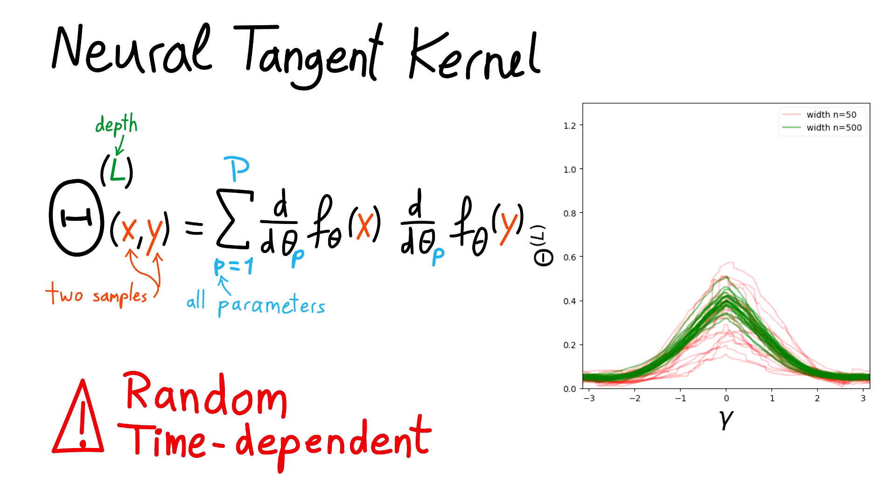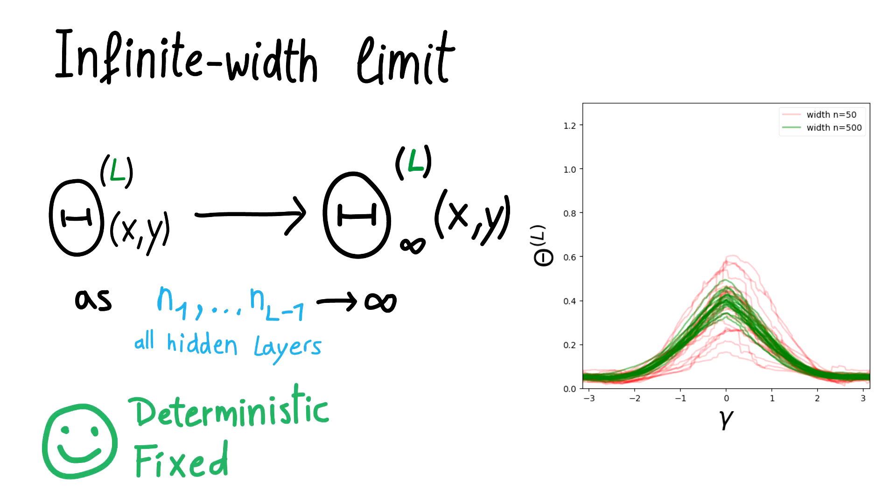This kernel depends on the parameters. It is therefore random at initialization and varies during training. However, in the infinite width limit, it converges to a deterministic limit at initialization and its rate of change during training goes to zero.